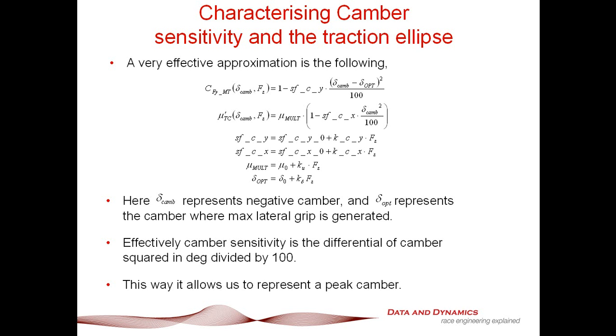As we all know, when a car brakes, when it goes into a corner, the camber is going to change from the static camber that you'd set up on the setup patch. So what we're basically plugging in here, our delta camber, is the camber that is currently on the tire. And what the delta optimum camber represents is that camber at which you are generating peak lateral grip.